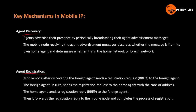First, agent discovery. Agents advertise their presence by periodically broadcasting their agent advertisement messages. Agents have a router — either a foreign agent or home agent. The mobile node receiving the agent advertisement messages observes whether the message is from its own home agent and determines whether it is in the home network or foreign network.